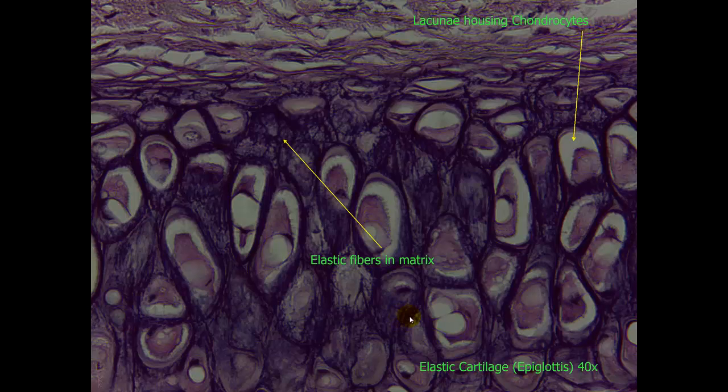Here is a 40x magnification of that same tissue. Here is your lacunae housing the chondrocytes. And here is the elastic fibers that you can see running in between the lacunae themselves. That is what makes it elastic cartilage.